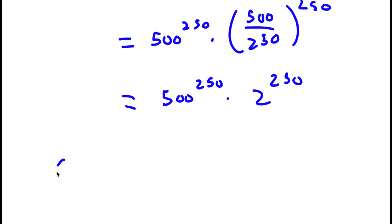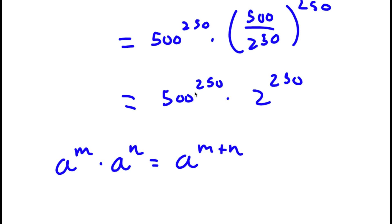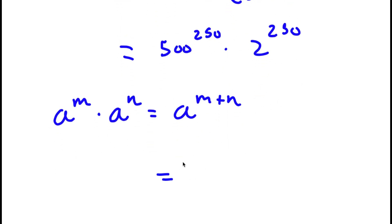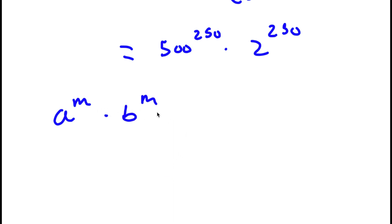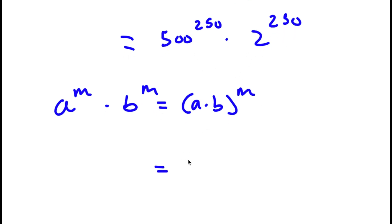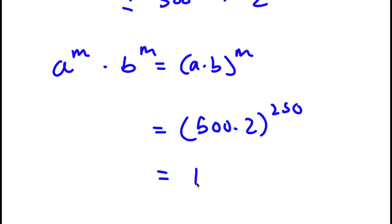If I have something in the form a to the power of m times b to the power of m, this is simply equal to a times b to the power of m. So 500 to the power of 250 times 2 to the power of 250 equals 500 times 2 to the power of 250. And 500 times 2 is 1,000, so I have 1,000 to the power of 250.